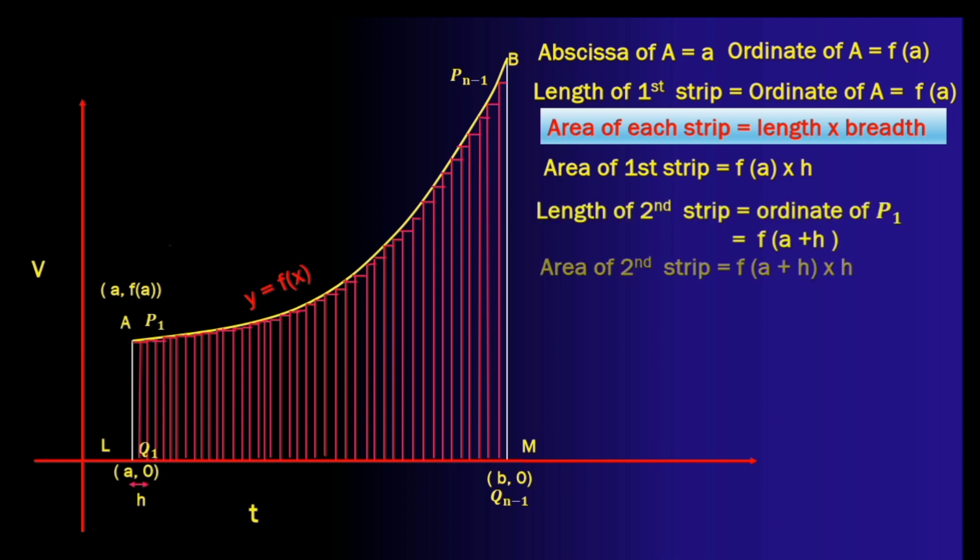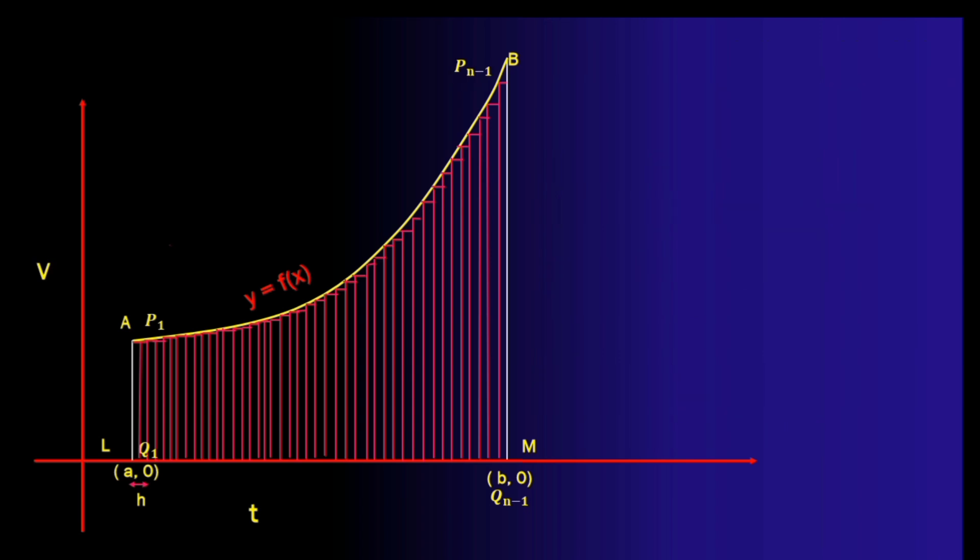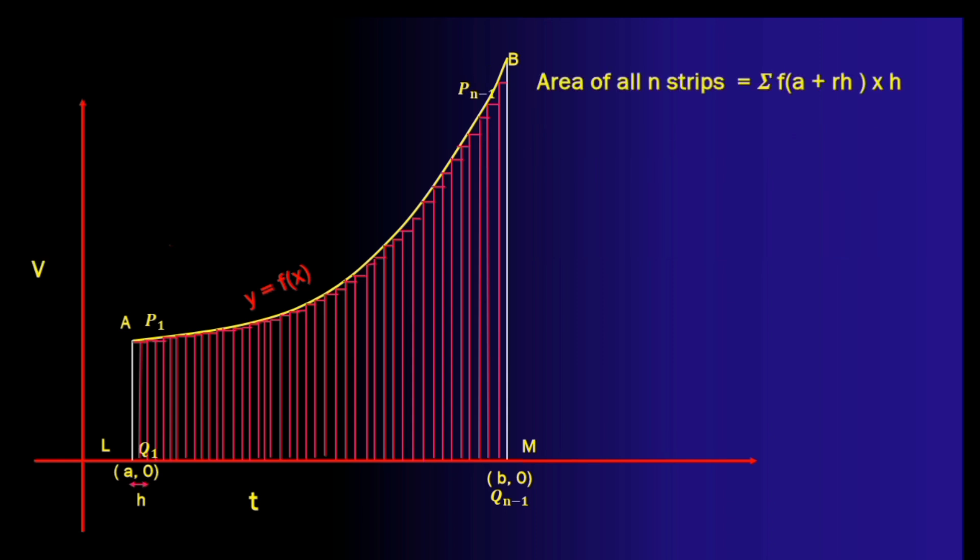In this way we can find the area of the second strip, the third strip and so on. So what will be the area of any general strip? Yes it will be f of a plus rh times h where r is from 0 to n minus 1. Now the area of all these n strips will be the summation of the areas of each strip. Now summation also means the symbol sigma. So this is the expression that we get.